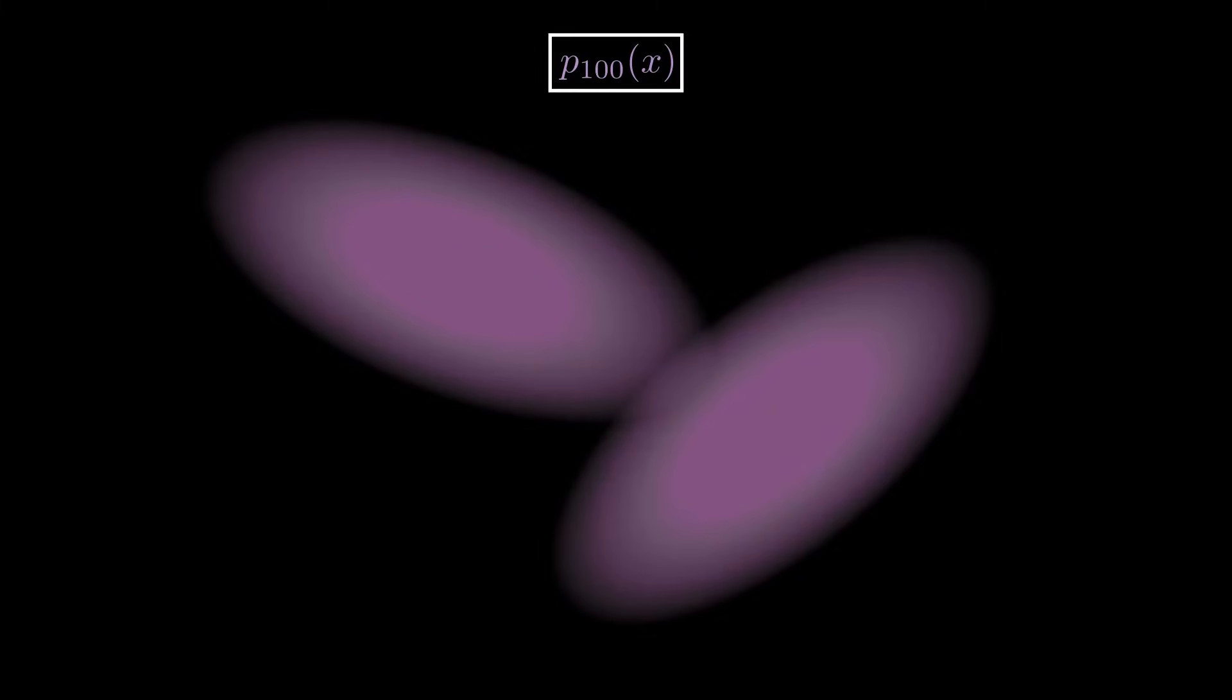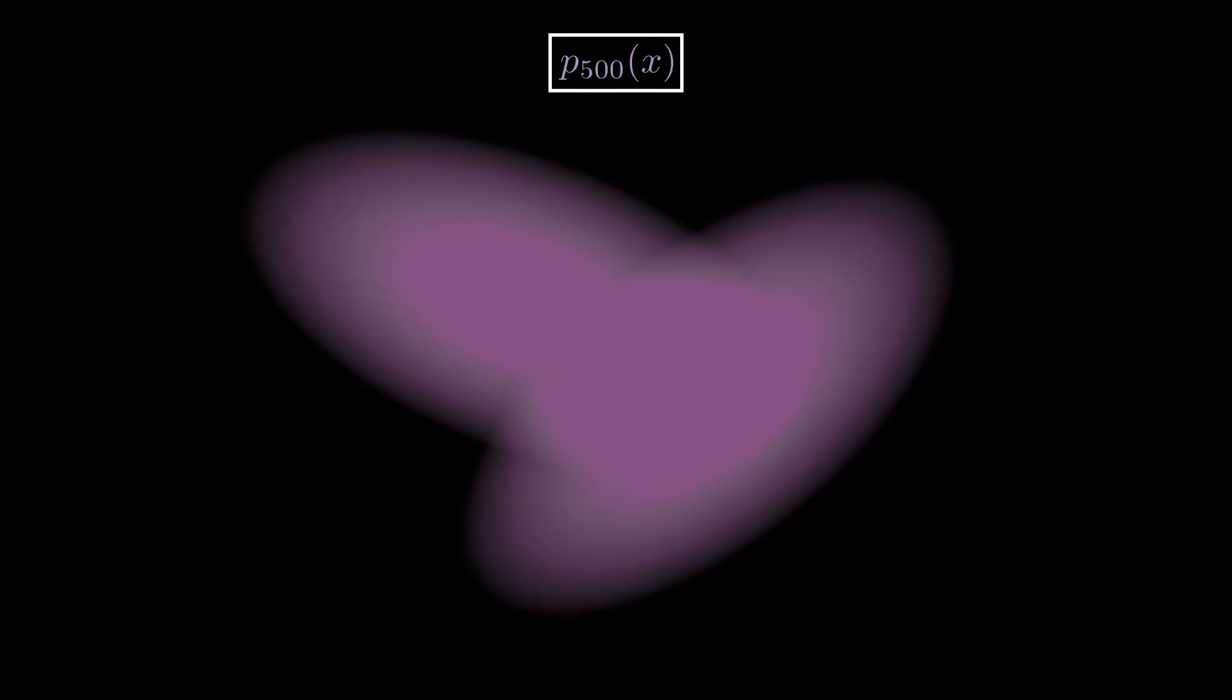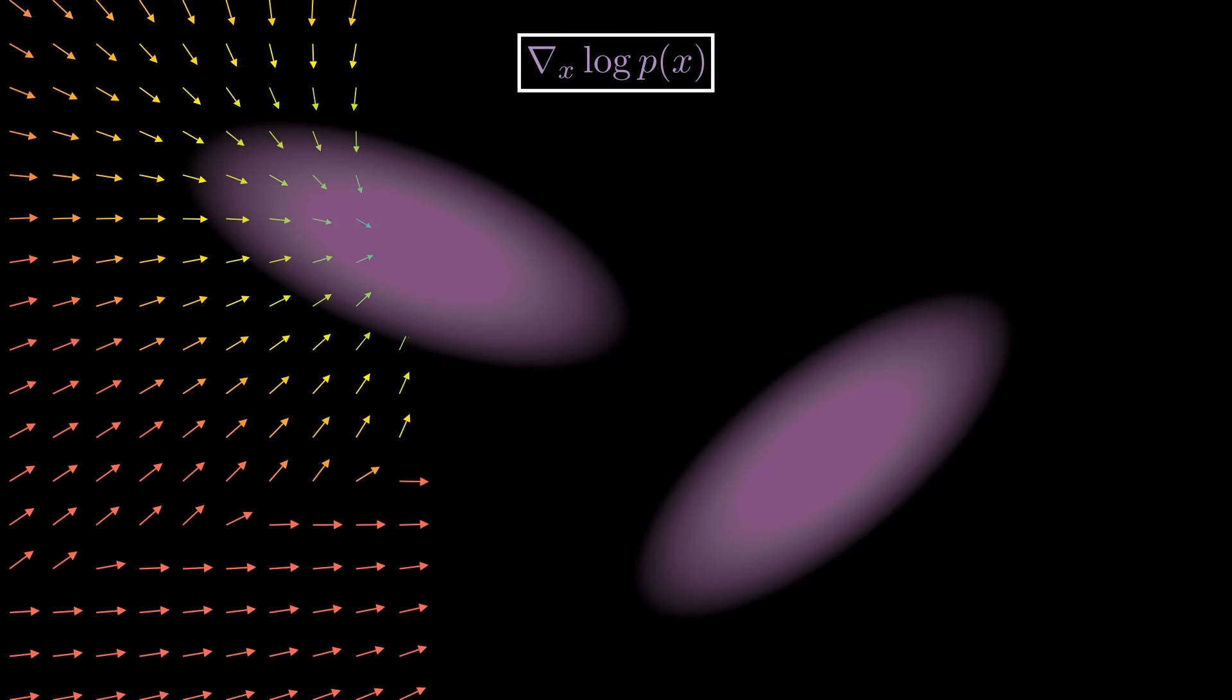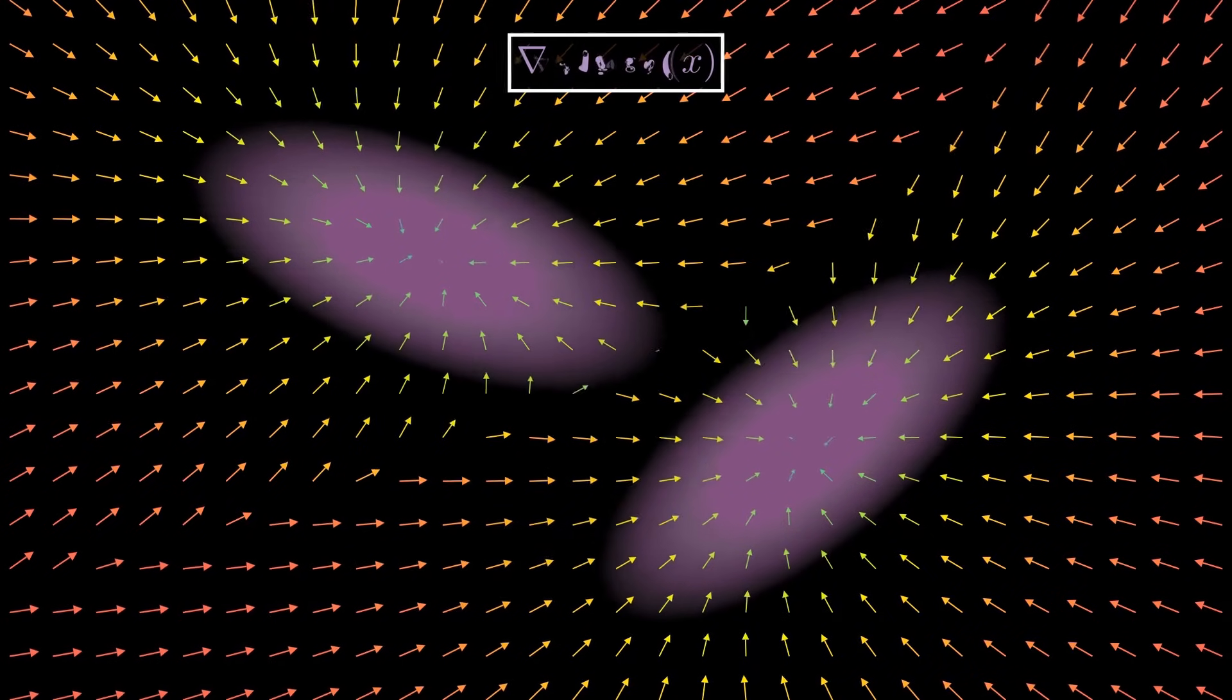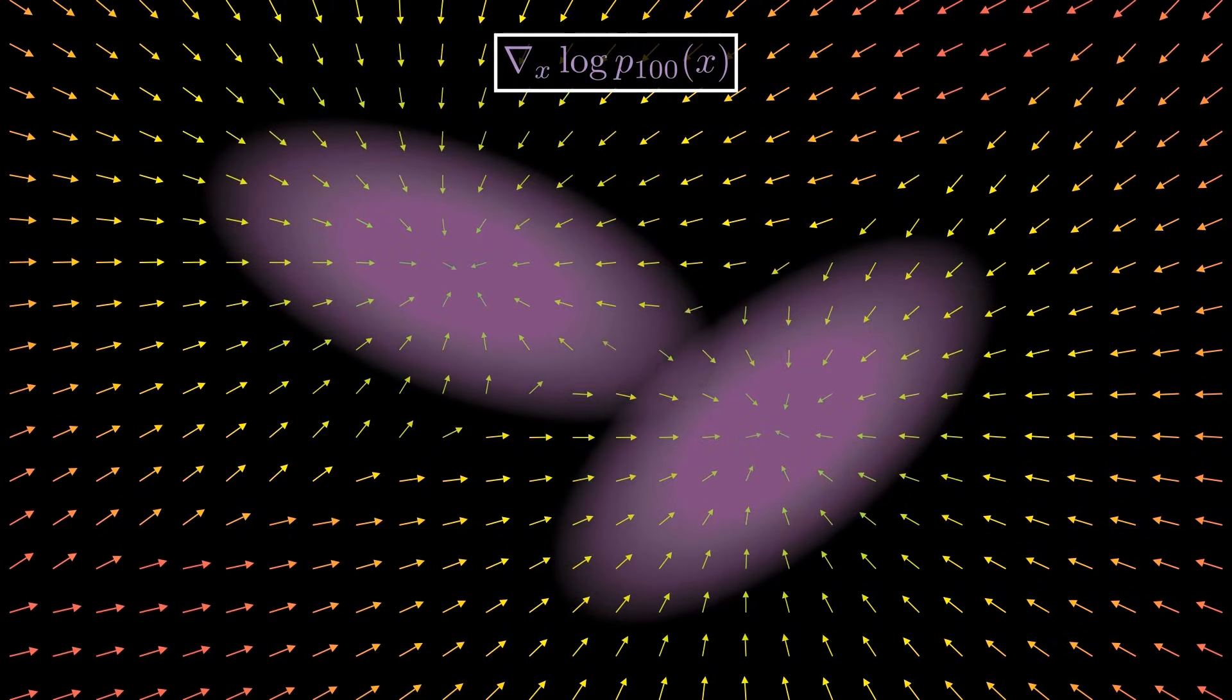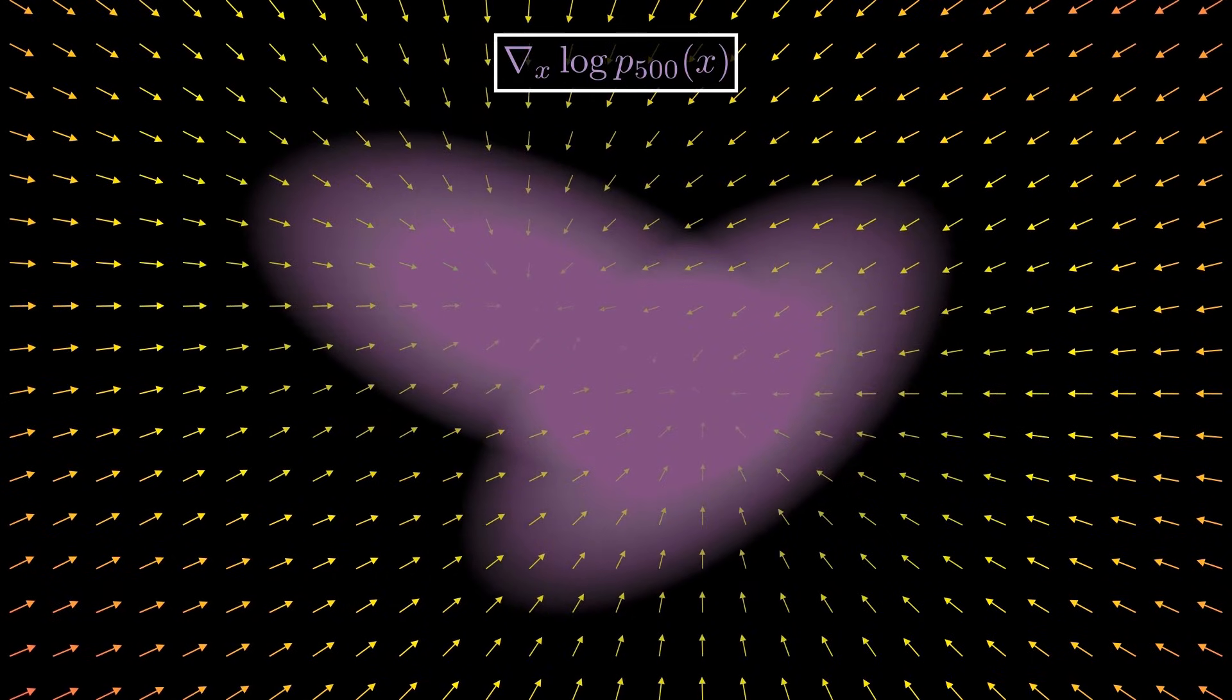Now what's the effect on the score function? Well, adding Gaussian noise to a distribution adds sort of a smoothing effect on the distribution, which also smooths the score function. At the beginning, when the data is still clean, the score function is sharp and complex. But as we add more noise, it gradually flattens out, until, at the final time t, it becomes similar to the score of the normal distribution.